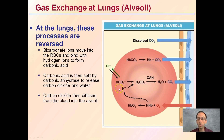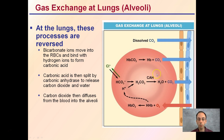At the lungs, these processes are simply reversed — carbon dioxide leaves and oxygen enters. Bicarbonate ions move into the red blood cells and bind with hydrogen ions to form carbonic acid. The carbonic acid is then split by carbonic anhydrase (the enzyme) to release carbon dioxide and water. Carbon dioxide can also diffuse from the blood to the alveoli, where the high surface area allows for this exchange to occur.